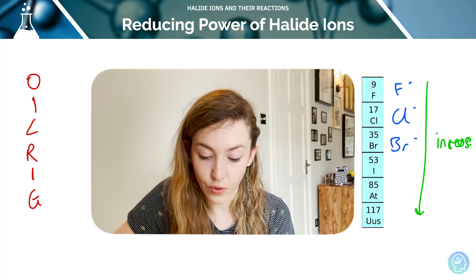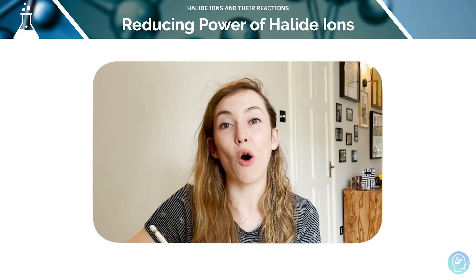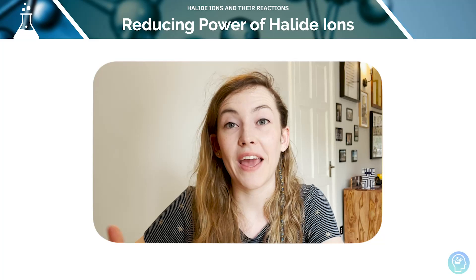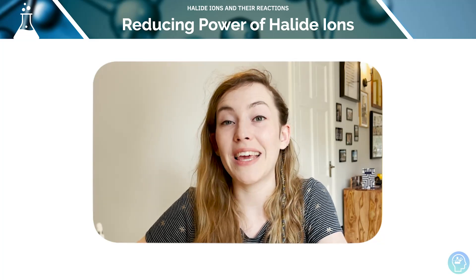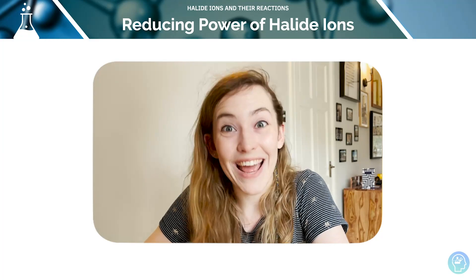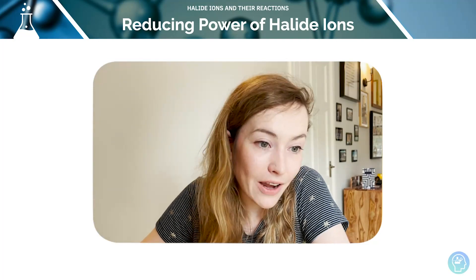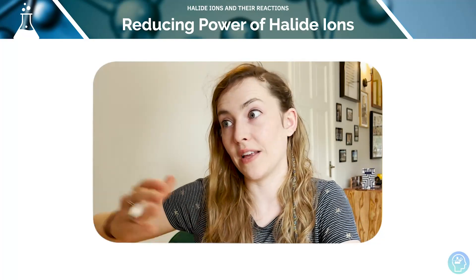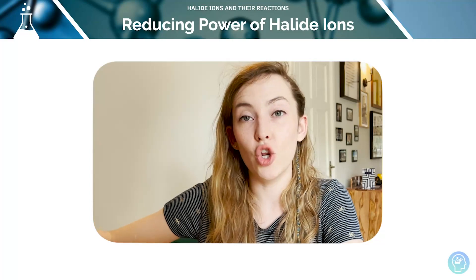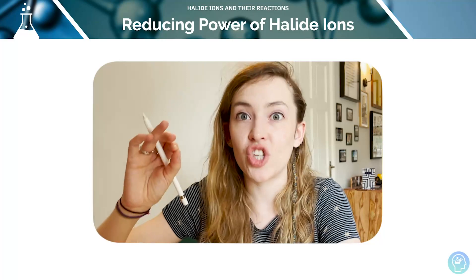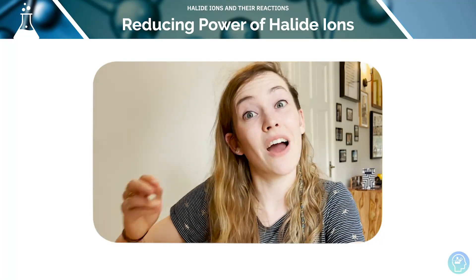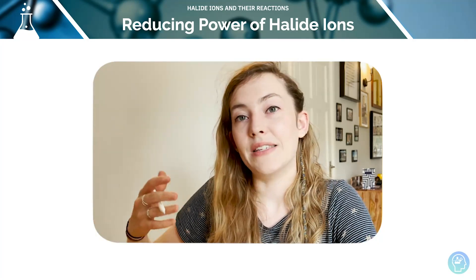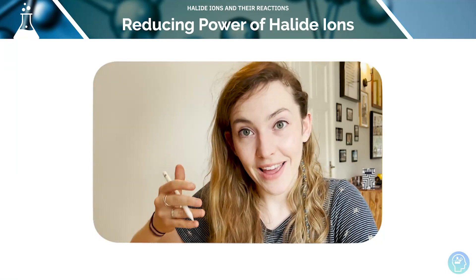As we move down the group, the reducing ability of the halide ions increases because when a halide ion acts as a reducing agent, it gives its electrons to something else — that other compound gains the electron. The halide ion itself is losing that electron. The bigger the halide ion, the further away from the positive nucleus that outermost electron is, so the easier it is to lose. As we move down, the radius gets bigger and shielding increases.